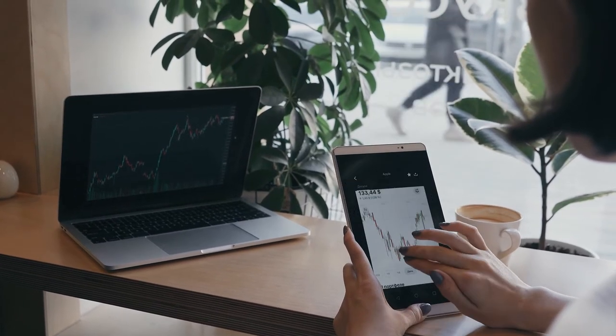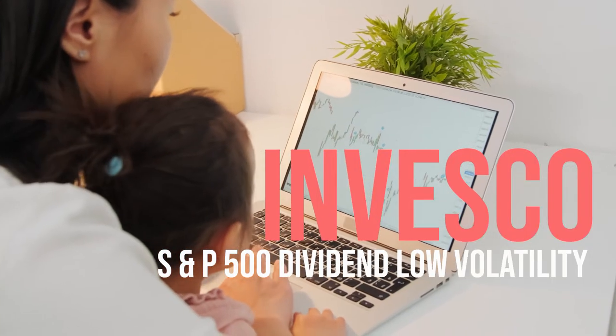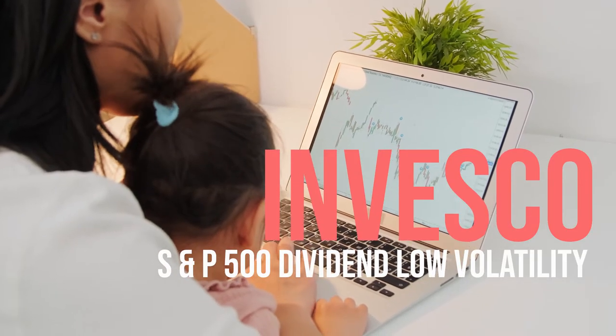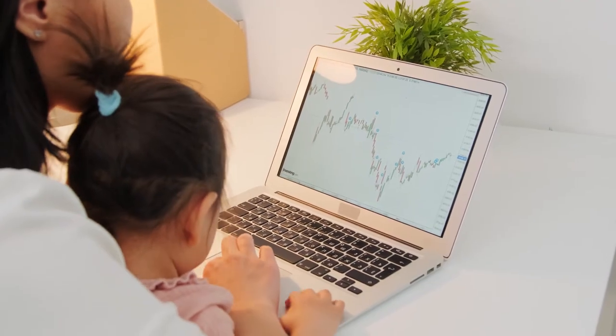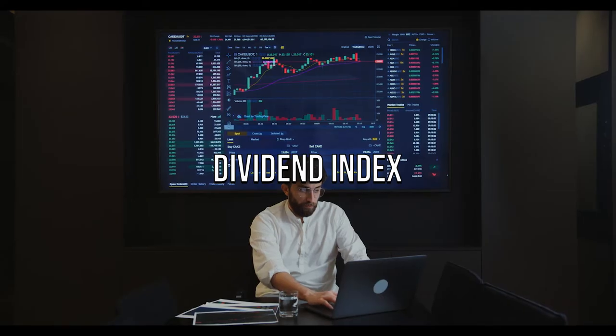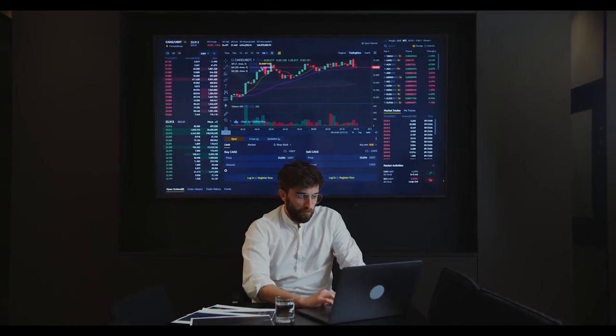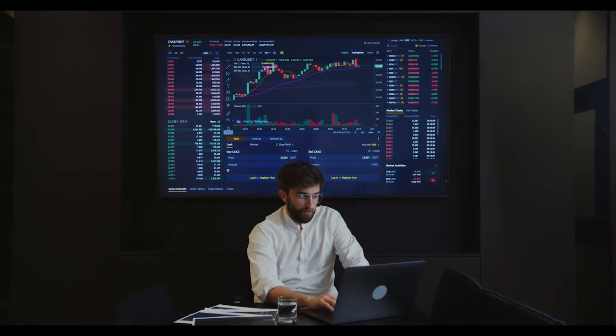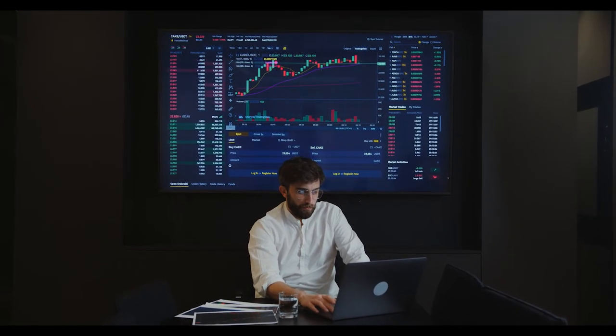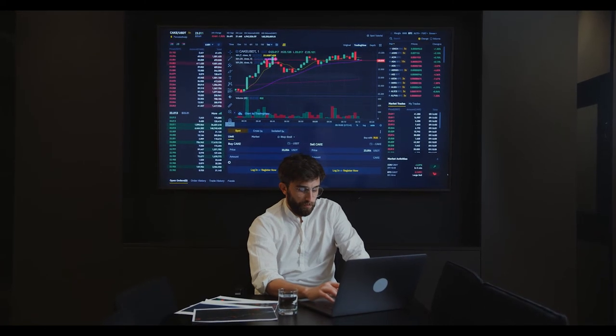Coming in at number five is SPHD, also known as the Invesco S&P 500 High Dividend Low Volatility ETF. SPHD is based on the S&P 500 Low Volatility High Dividend Index, which measures the performance of the S&P 500's 50 least volatile, high dividend-yielding stocks. Because SPHD was built around this index as a benchmark for investors looking to earn income from their investments, it's safe to say that it's a great choice for your dividend portfolio.